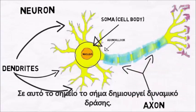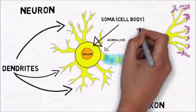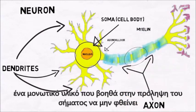At this point, the signal is called an action potential. The action potential travels down the axon, which is covered with myelin, an insulatory material that helps to prevent the signal from degrading.